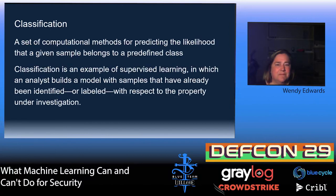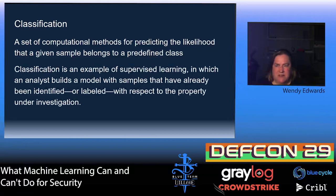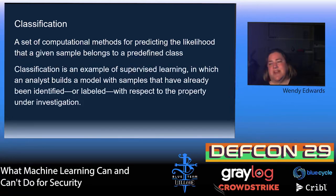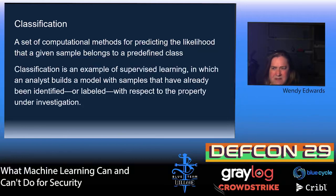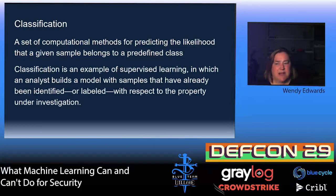Classification is a bit different because you've got predefined classes and you're trying to figure out what the odds are that a sample will be part of one of those classes. Classification is an example of supervised learning, which means you have to start with a pre-labeled data set. One important point: a sample can belong to multiple classes at the same time — a mango could be part of food, yellow, tropical, whatever. A very common classification problem related to security is classifying email as spam, benign, or possibly phishing — sometimes phishing gets its own classification.